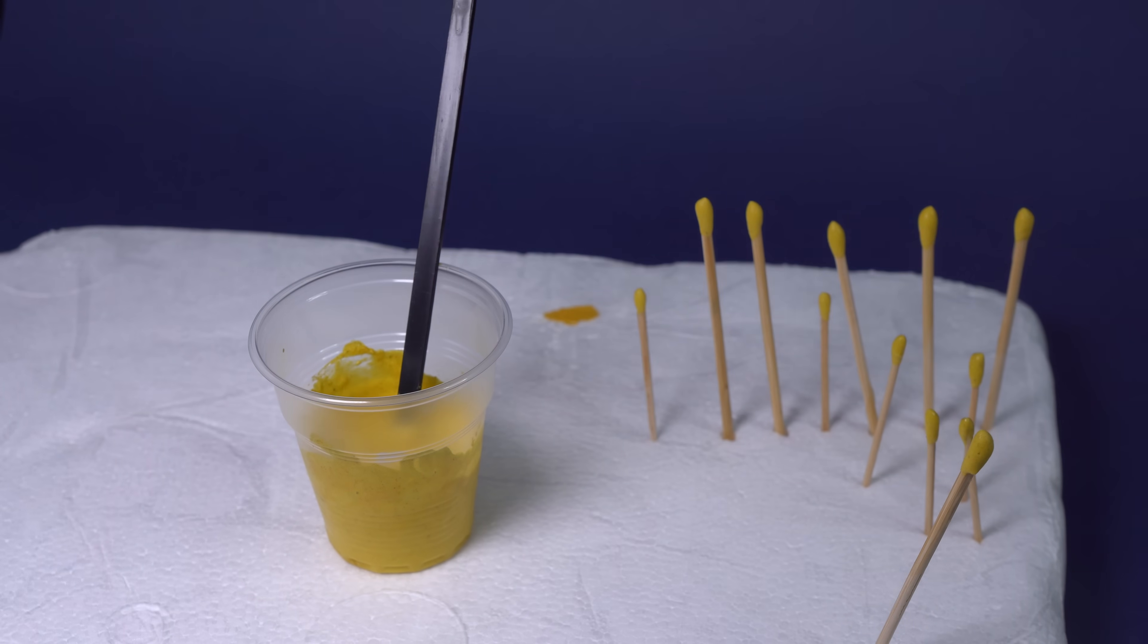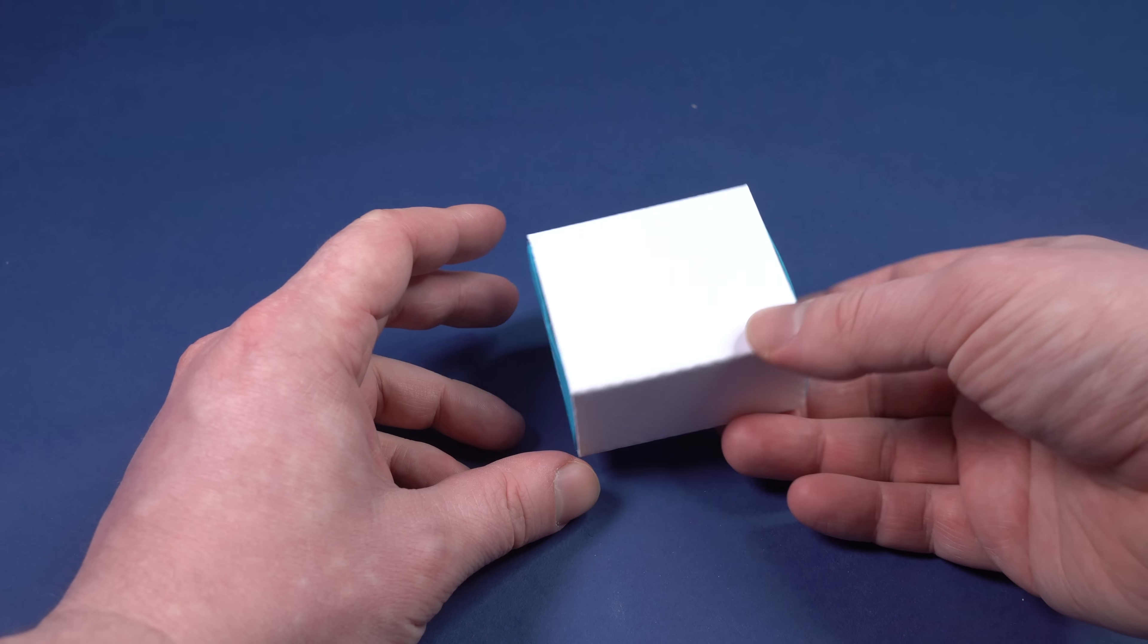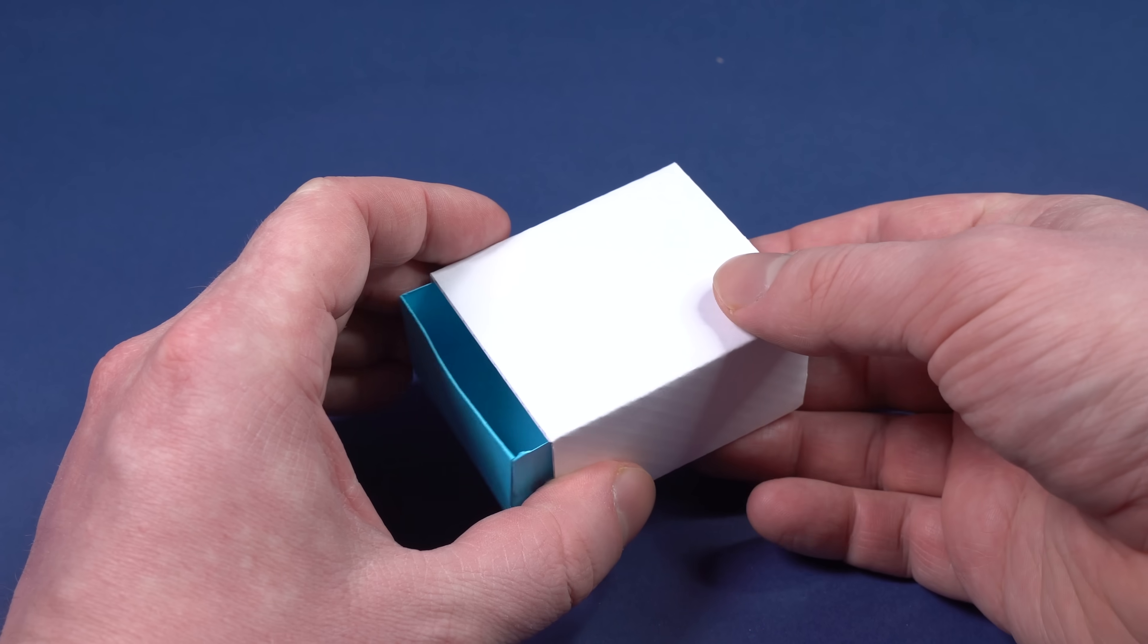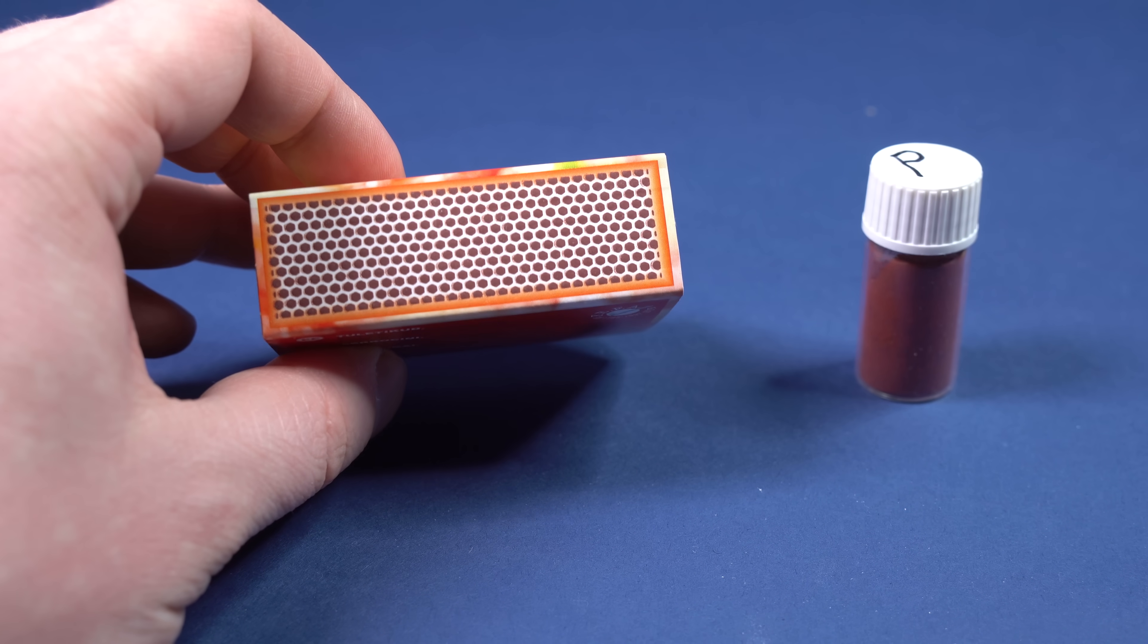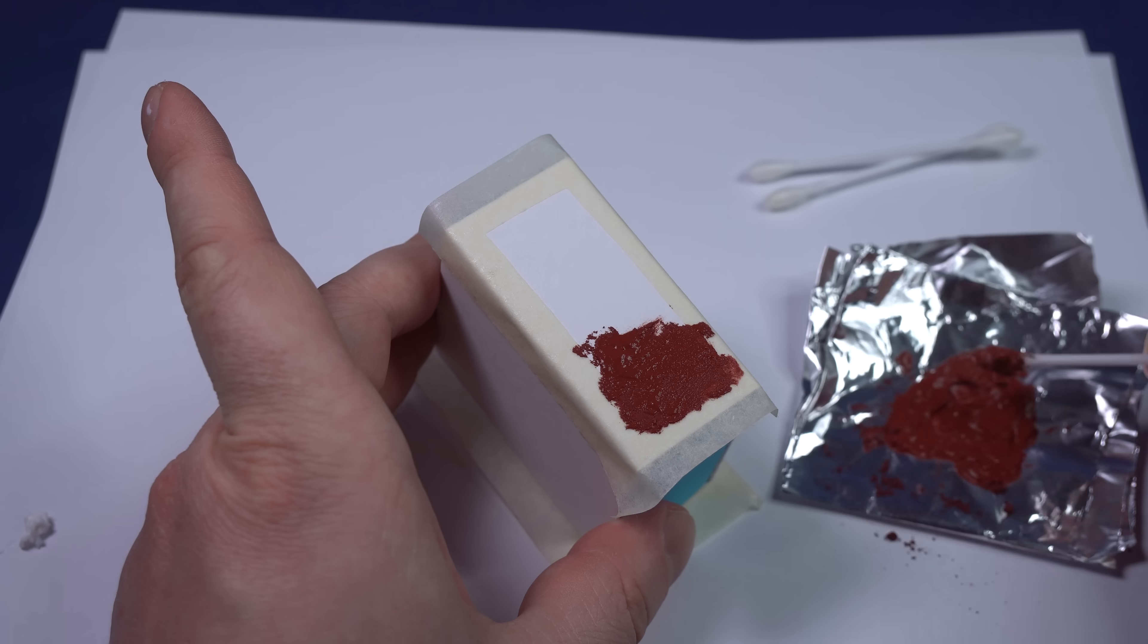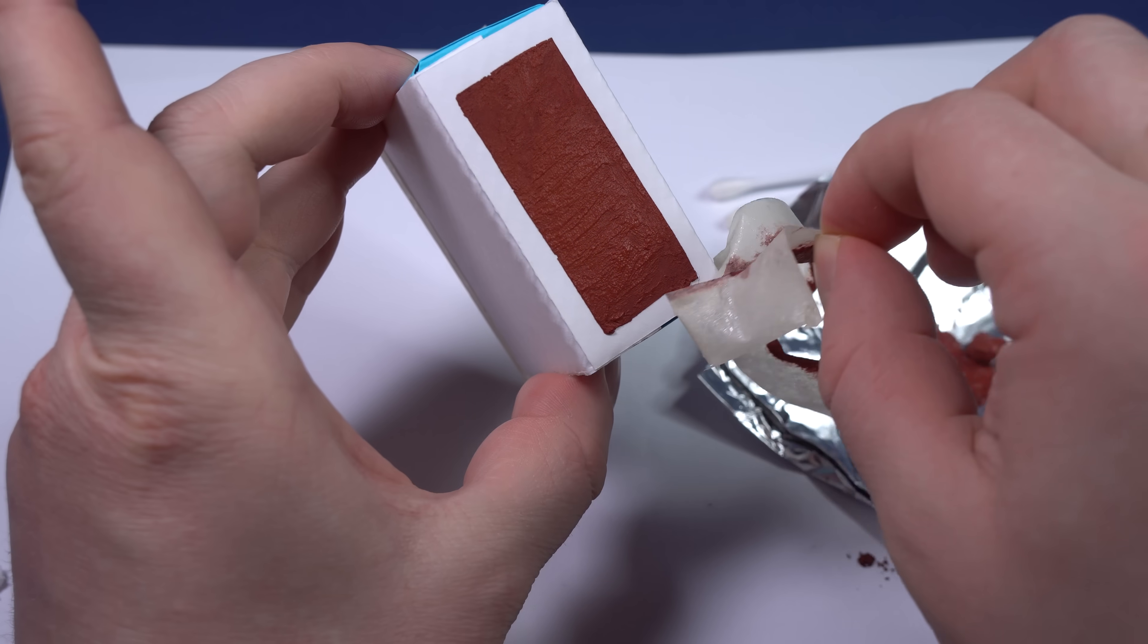While matches are drying up, we need to do another important thing. We need to make a match box and a striking strip that will be used to light up matches. I have made a box in advance, simply having glued together cardboard pieces following a matches box pattern. To make a striking strip, I am mixing red phosphorus with PVA glue. After that, I sprayed it on the side of the match box. When the batter dries up, the striking strips are ready.